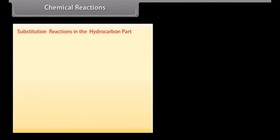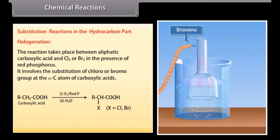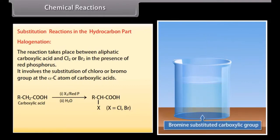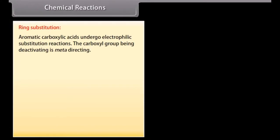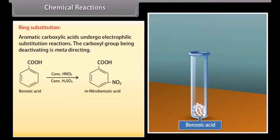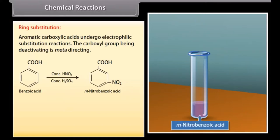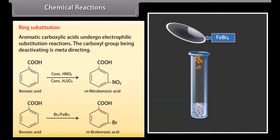Substitution reactions in the hydrocarbon part. Halogenation: The reaction takes place between aliphatic carboxylic acid and chlorine or bromine in the presence of red phosphorus. It involves the substitution of a chloro or bromo group at the alpha carbon atom of carboxylic acids. The reaction is known as the Hell-Volhard-Zelinsky reaction. Ring substitution: Aromatic carboxylic acids undergo electrophilic substitution reactions. The carboxyl group being deactivating is meta-directing. On adding concentrated nitric and sulfuric acid into benzoic acid, it is converted into meta-nitrobenzoic acid. On adding bromine and ferric bromide into benzoic acid, it is converted into meta-bromobenzoic acid.